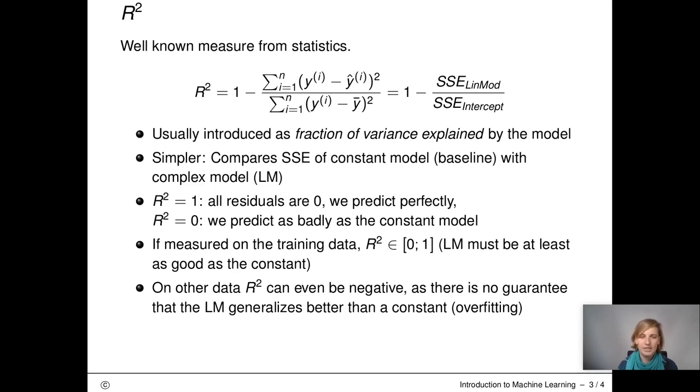On different data, however, it can also take on other values. In the case of overfitting, for example, we could even see negative R squared. Negative R squared means that the complex model is worse than the constant model.